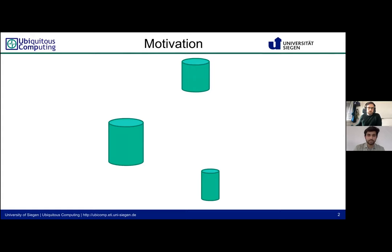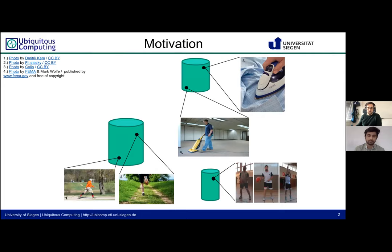Datasets of human activity data from variable sensors contain different activities from specific domains, like for example sports or activities of daily living. Deep learning classifiers achieve different classification results depending on the dataset attributes, the network architecture used, and the amount of data available for training. However, the amount of data needed to train a high-quality classifier is huge, and in the human activity recognition community, the available datasets do not fulfill these requirements.